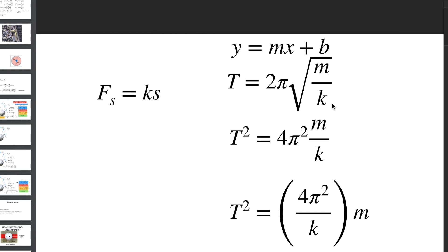With a stiffer spring it takes less time to oscillate. T is not proportional to m directly because of the square root. But if I square both sides I get T² = (4π²/k) × m. That's a constant times m, so if I plot T² versus m it should be a straight line, and the slope will be 4π²/k — not k itself. So I need to calculate T².